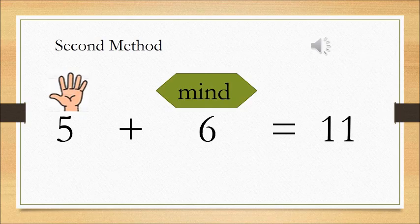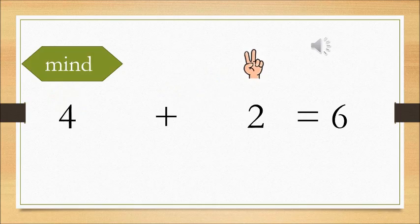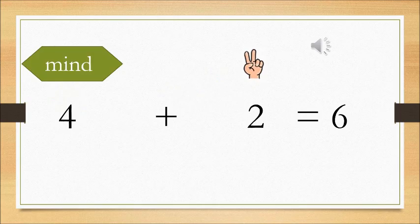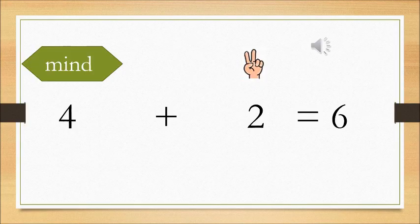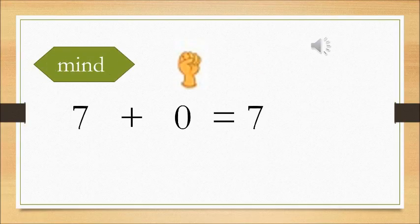So let's see a few more sums with this. 4 plus 2. We have 4. 4 is a bigger number. So we have 4 in our mind and we put 2 fingers out. So after 4, what do we have? 5 and 6. Right? Awesome.